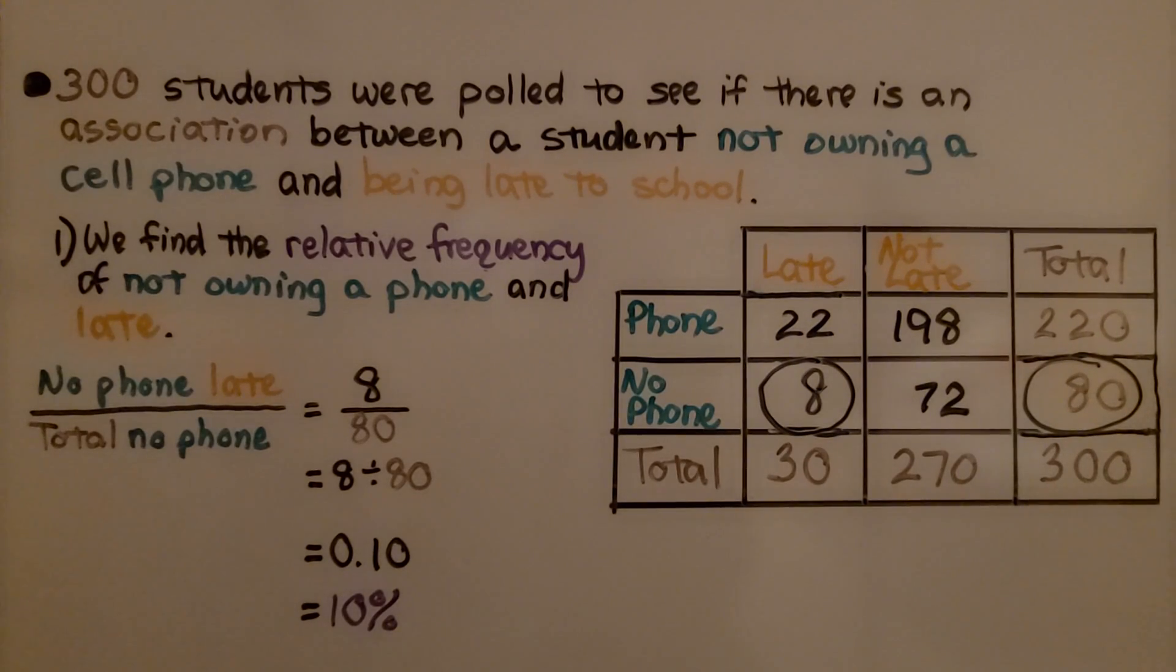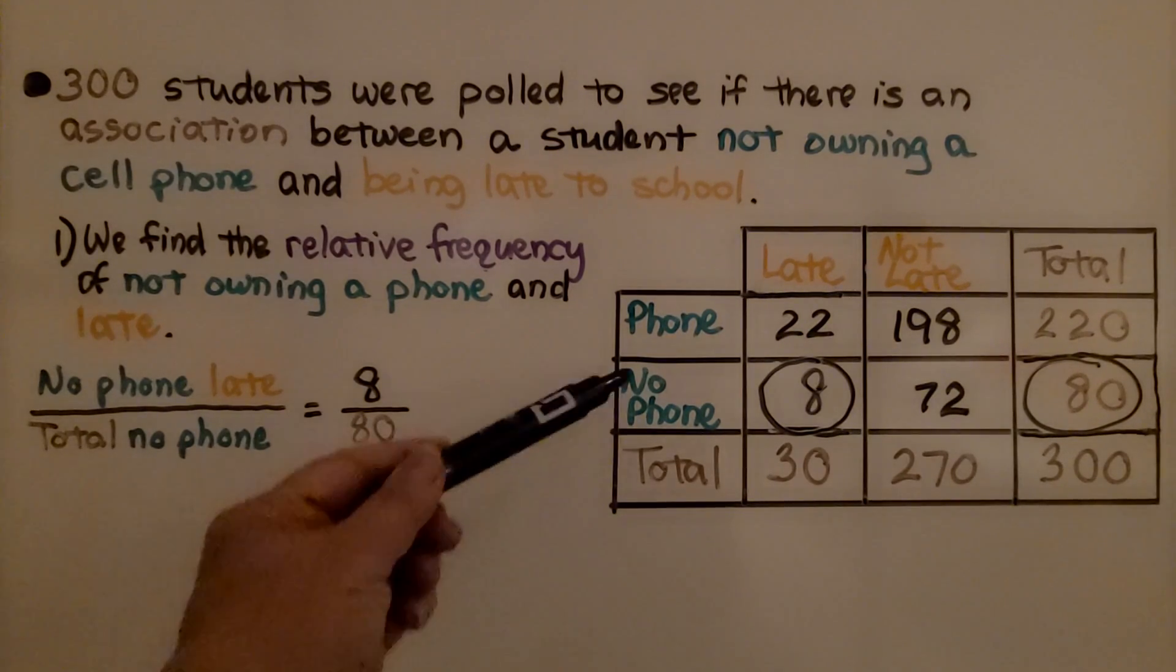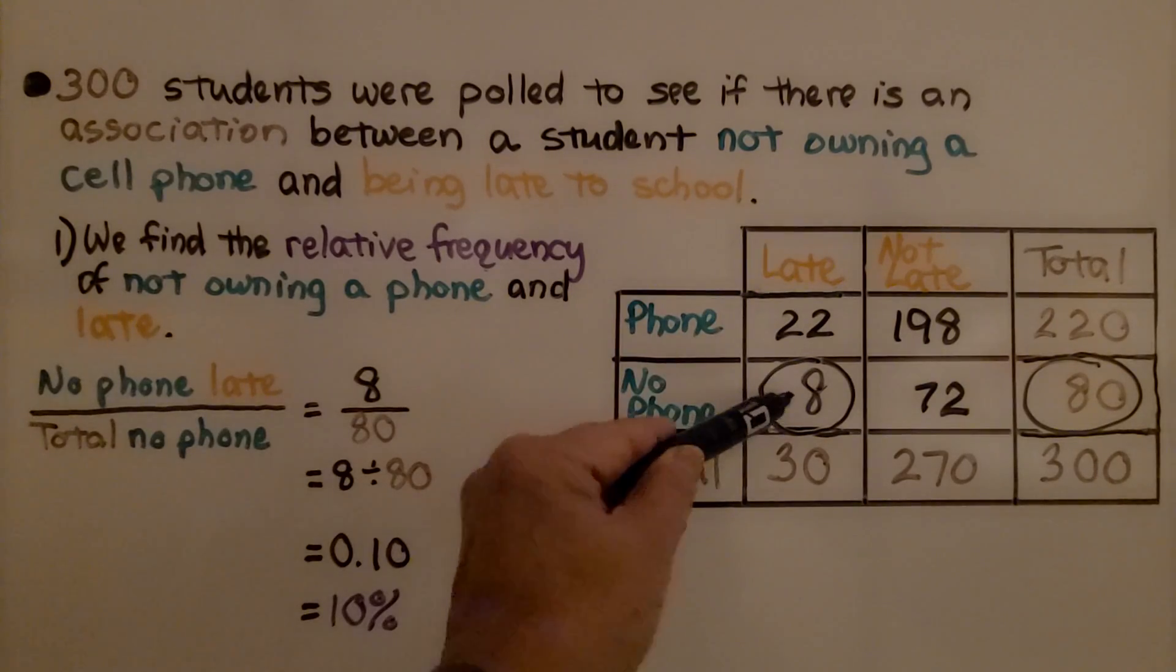300 students were polled to see if there's an association between a student not owning a cell phone and being late to school. First we find the relative frequency of not owning a phone and late. So here's no phone, here's late, we have an 8.